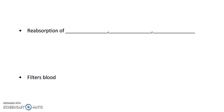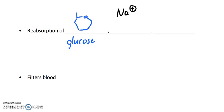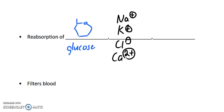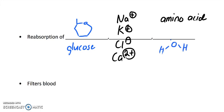A second function is that we're going to reabsorb some things that we want to keep. One thing we want to keep — which can be used to create energy — is glucose. We're also going to keep some ions: sodium, potassium, chloride, and calcium. We can also reabsorb amino acids, the building blocks to create protein, and last but not least, we can reabsorb water depending on the environment.